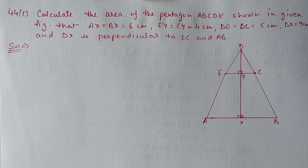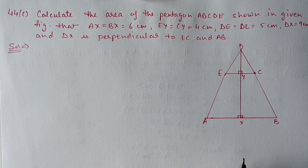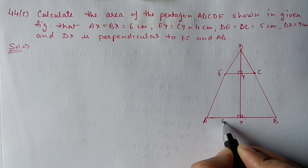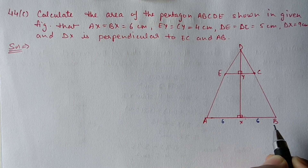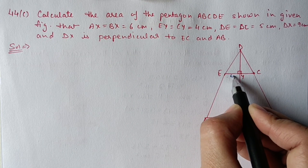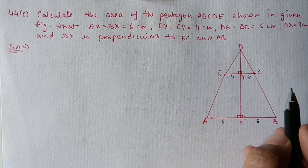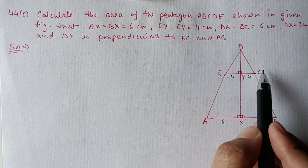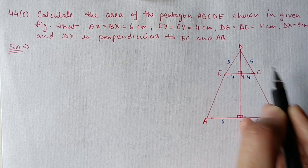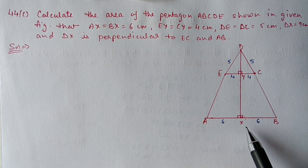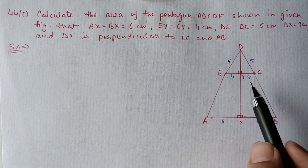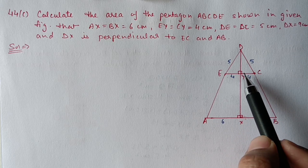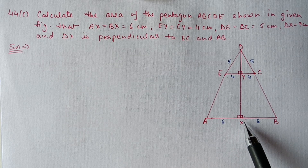Next, question 44 part c: calculate the area of pentagon ABCDE. Measurements given: AX and BX are 6 cm each; EY and CY are 4 cm each; DE and CD are 5 cm each; DX is 9 cm total. We can find the unknown length using the Pythagorean theorem since the perpendicular is given.